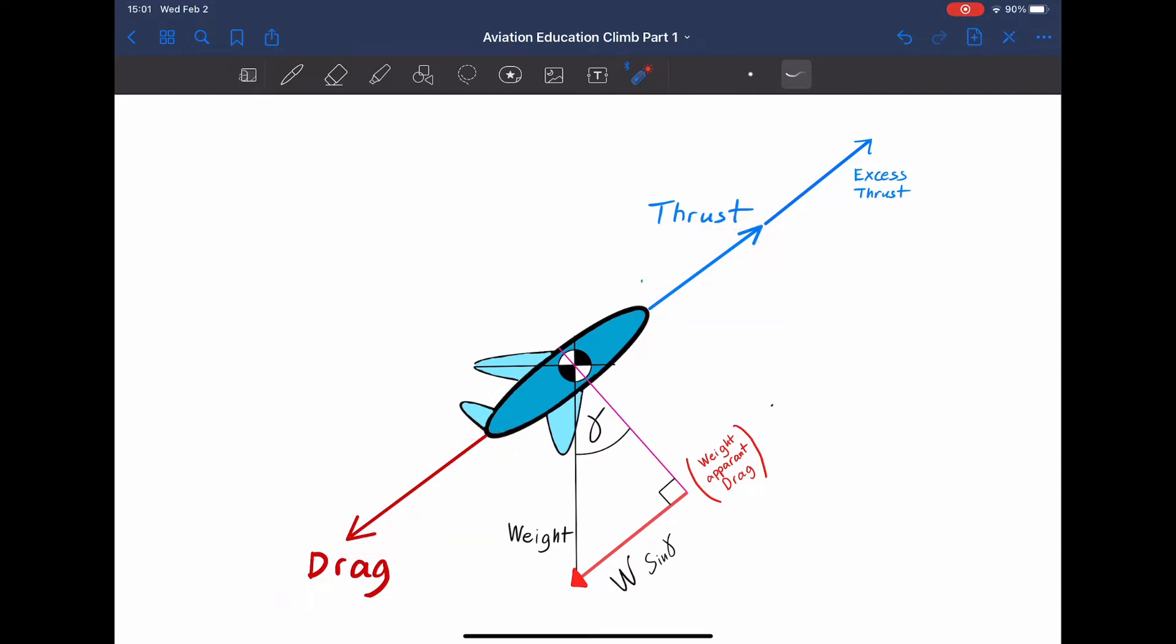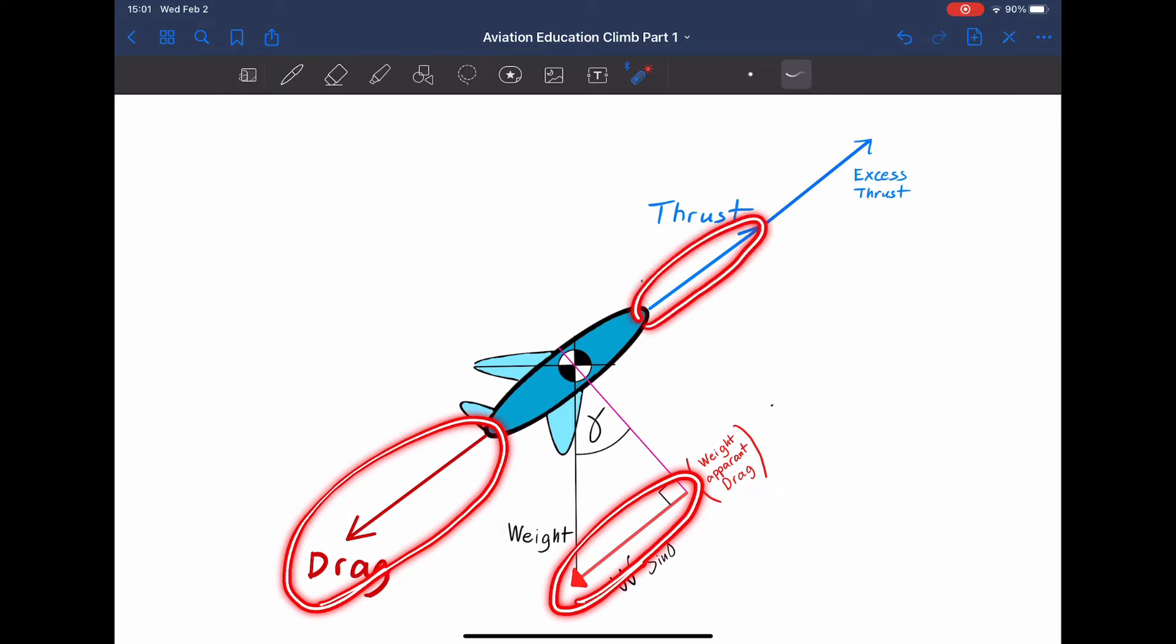The weight apparent drag and the original aerodynamic drag are now greater than the original thrust vector. If this deficiency in thrust is allowed to continue, then the aircraft will begin to slow down. To prevent the slowdown from happening, you would require excess thrust.